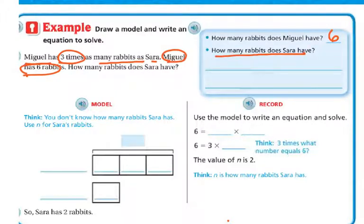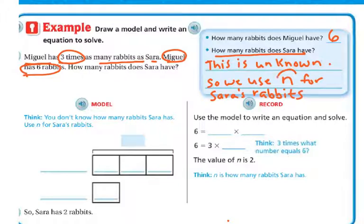How many rabbits does Sarah have? Well, she has an unknown amount. We don't know. So we're going to use the letter N to represent Sarah's rabbits. So let's do our model. So think. You don't know how many rabbits Sarah has, so you're going to use N for hers. So this is Sarah, and we don't know how many rabbits she has, so we're going to put N.